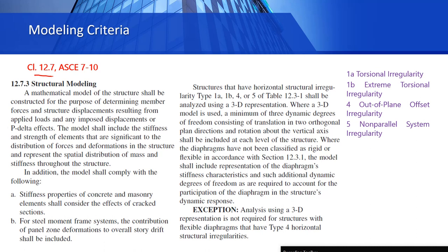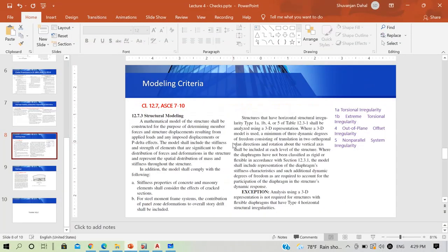The same code in clause 12.7 on structural modeling states that structures with horizontal irregularity types 1a, 1b, 4, or 5 of Table 12.3-1 — including torsional irregularity, extreme torsional irregularity, out-of-plane offset, and non-parallel systems — shall be analyzed using a 3D representation. Where diaphragms have not been classified as rigid or flexible per 12.3.1, the model shall include representation of the diaphragm's stiffness characteristics — that is, semi-rigid modeling.